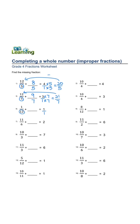denominator is 12. 1 times 12, 1 times 12 equals 12 over 12. 12 minus 1 is 11 over 12.